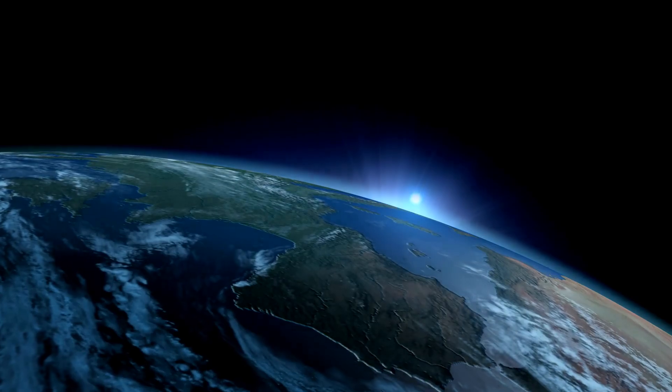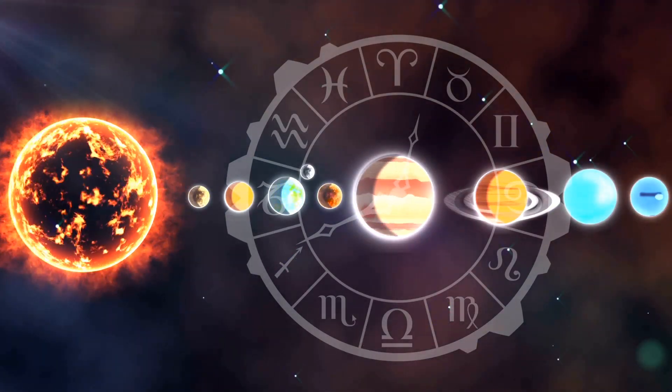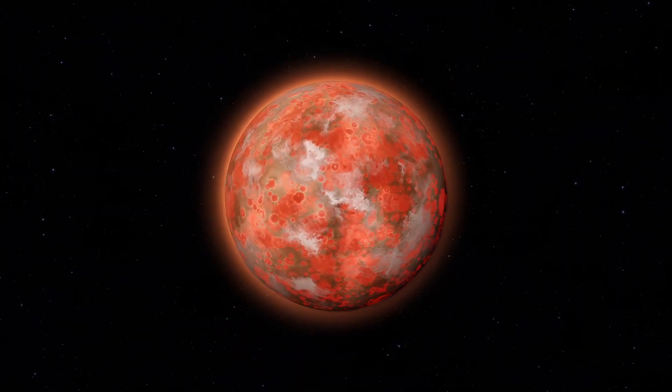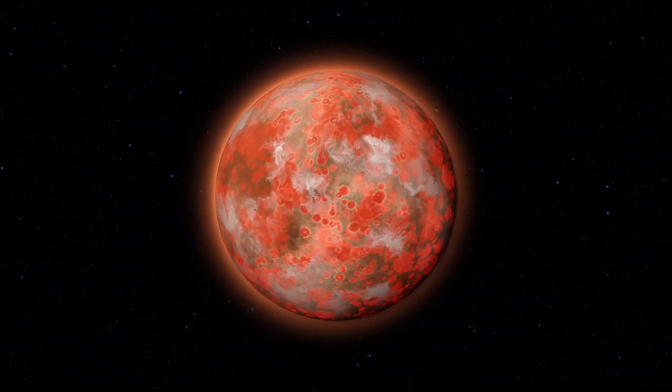First, why does Earth spin in the first place? It all started about 4.5 billion years ago when our solar system was just a chaotic disk of gas and dust. As gravity pulled this material together to form planets, a natural spin was introduced, thanks to angular momentum.